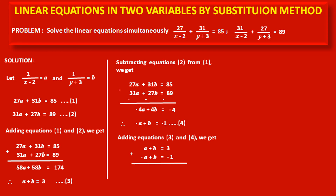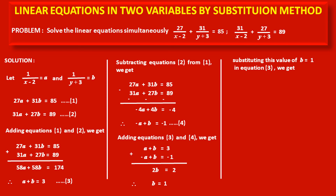Adding these two equations, a and -a cancel each other. b + b = 2b = 3 + (-1) = 2. Dividing both sides by 2, b = 1. Substituting into equation 3: a = 3 - b = 3 - 1 = 2. So a = 2.